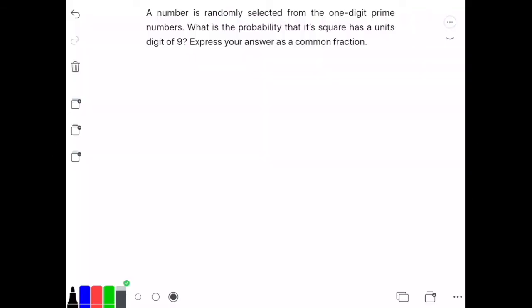The question is asking for the probability of selecting a prime number with a units digit of 9. So I'm going to start by listing the total outcomes.